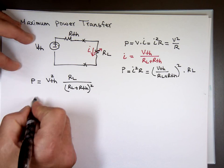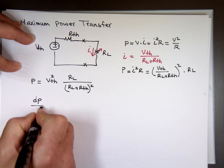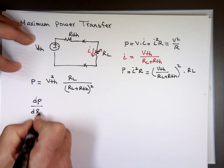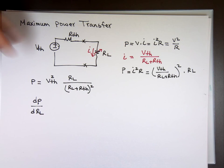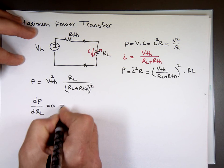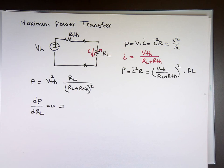You need to take the derivative and set it equal to zero. So I need to find dP/dRL with respect to R sub L. And I need to set that equal to zero. And what value will make that zero? That's the value for maximum power transfer, or minimum. In this case, it would be a maximum.